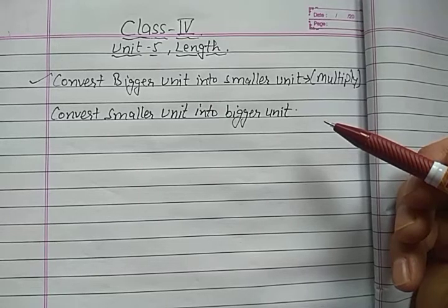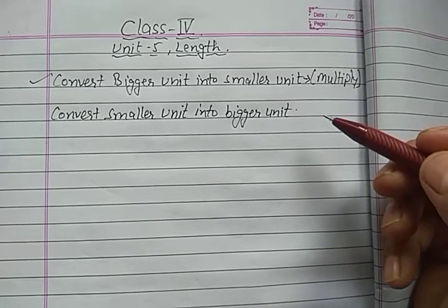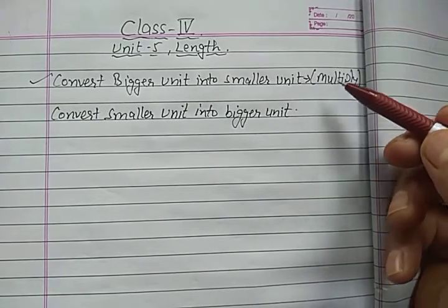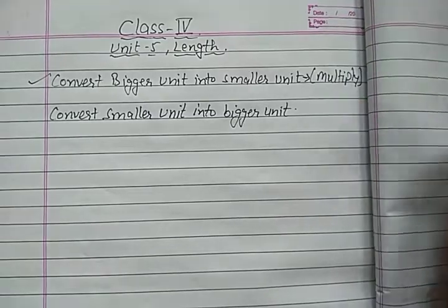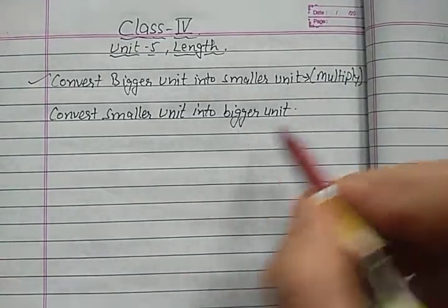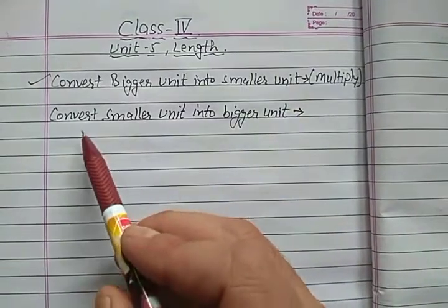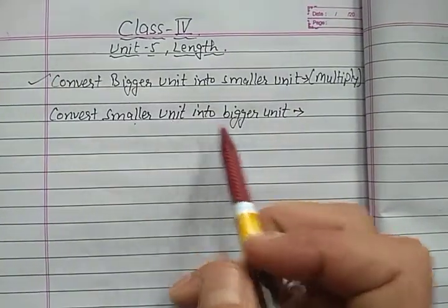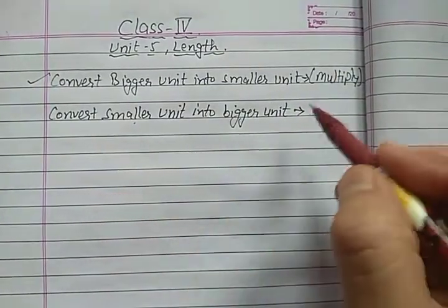Addition's opposite is subtraction, subtraction's opposite is addition, multiplication's opposite is division, and division's opposite is multiplication. So if we have to convert smaller unit into bigger unit, then we have to divide.